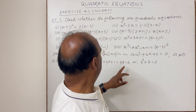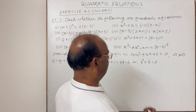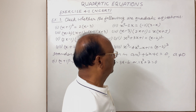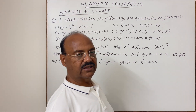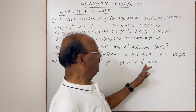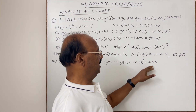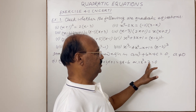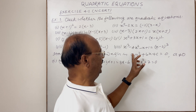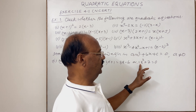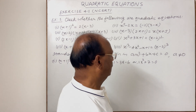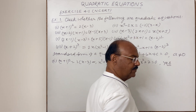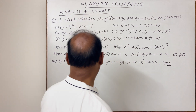Here a = 1 (which is 1·x²), b = 0 (no x term), and c = 7. Since a = 1 ≠ 0, this is a quadratic equation.